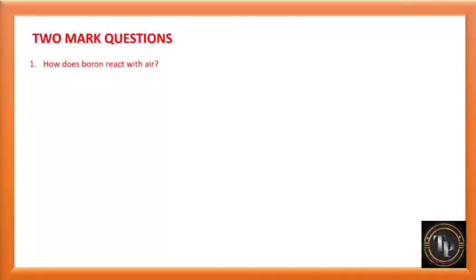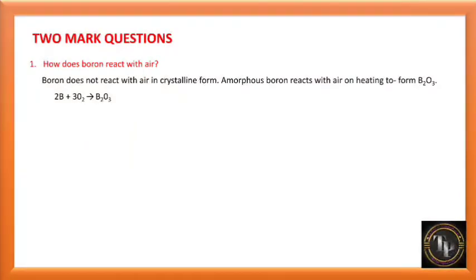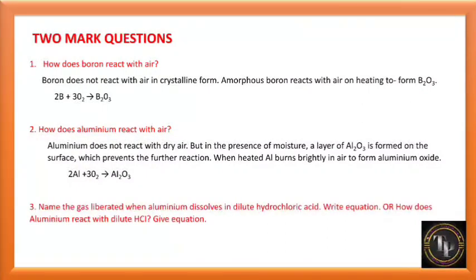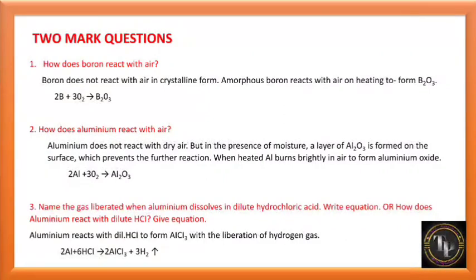How does boron react with air? Boron does not react with air in crystalline form. In amorphous form, boron reacts with air on heating to form B2O3 (boron trioxide). How does aluminium react with air? Aluminium does not react with dry air, but in the presence of moisture a layer of Al2O3 is formed on the surface, which prevents further reaction. When heated, aluminium burns brightly in air to form aluminium oxide. When aluminium dissolves in dilute HCl, AlCl3 and hydrogen gas are liberated.